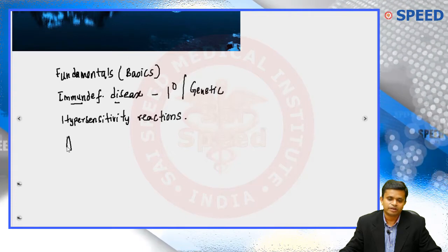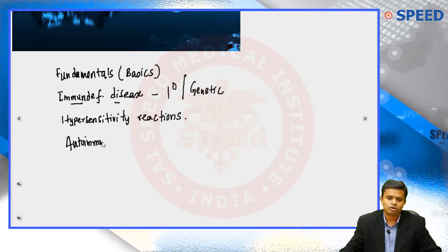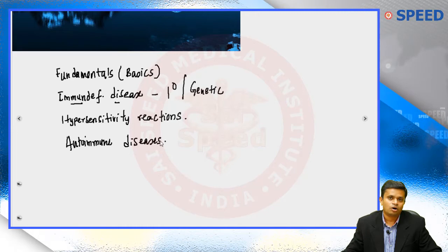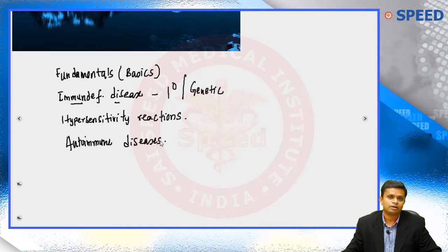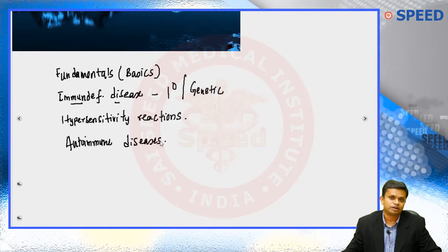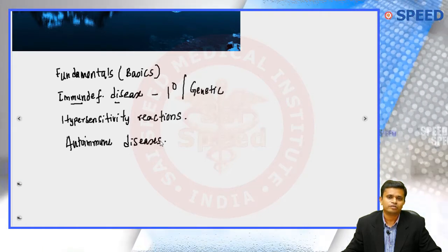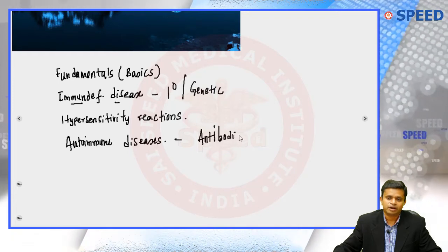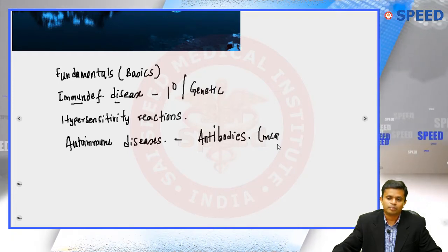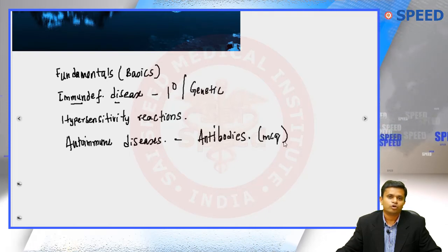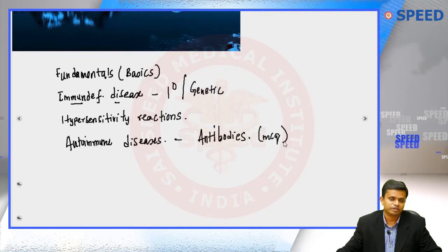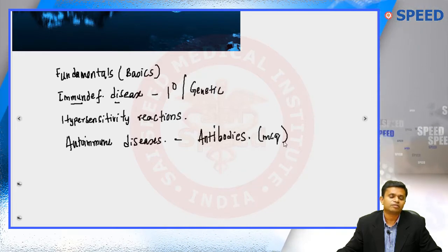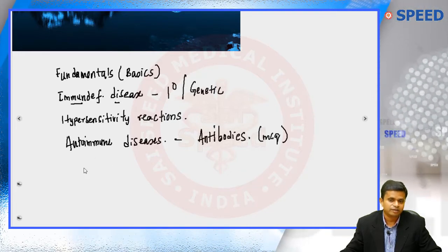The fourth important area is autoimmune diseases. You have to learn prototypical autoimmune diseases like SLE, Sjögren's syndrome, and mixed connective tissue disorders. Our main focus will be on the antibodies — the appropriate antibody for each condition, because MCQs often ask: what is the antibody of choice in Sjögren's syndrome, celiac sprue, autoimmune hepatitis, or primary biliary cirrhosis?